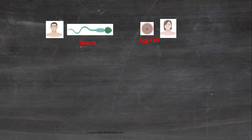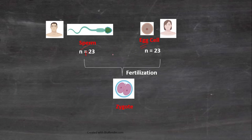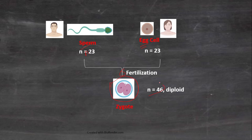When a haploid sperm (n = 23) and a haploid egg (n = 23) undergo fertilization, the process results in the formation of a zygote. This zygote is diploid in nature because it contains 46 chromosomes in total — 2n, because 2 times 23 equals 46, where n refers to the haploid number.